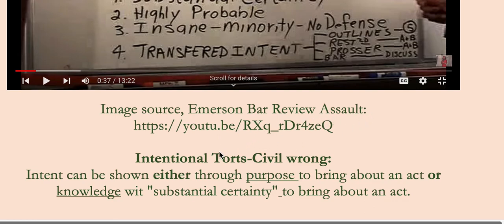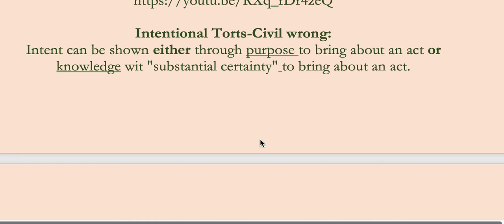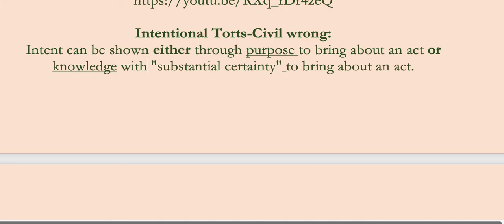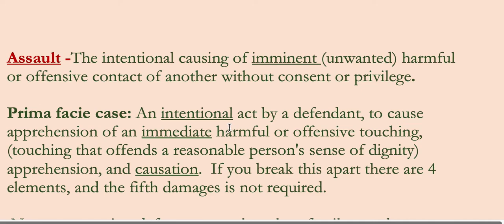The video is on assault. Now let's go over intentional torts quickly. Intent can be shown either through purpose to bring about an act or knowledge with substantial certainty to bring about an act. Now, for assault: the intentional causing of imminent, unwanted, harmful, or offensive contact of another without consent or privilege.